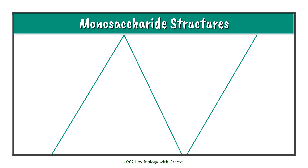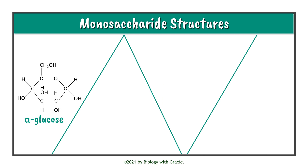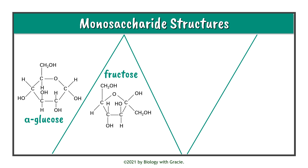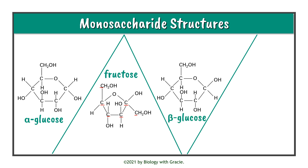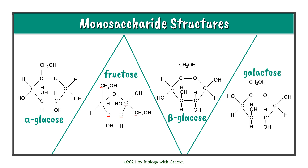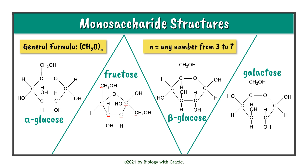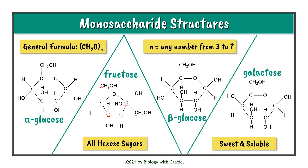Now let's go over some monosaccharide structures. We have alpha glucose, which we've already discussed. We then have fructose, which has a pentagon-like structure — but it's important to emphasize that these are all hexose sugars as they have six carbon atoms. Don't let the pentagon shape confuse you; fructose is a hexose sugar. We also have beta glucose and galactose. The general formula for a monosaccharide is (CH₂O)n, where n is any number from three to seven. They are usually sweet and soluble.